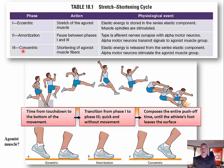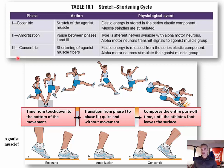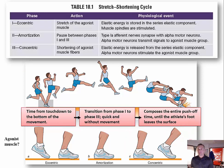The third and final phase of the stretch shortening cycle is the concentric phase — the body's response to the eccentric and amortization phases. In this phase, the energy stored in the series elastic components during the eccentric phase either is used to increase the force of the subsequent movement or is dissipated as heat, which would occur if the amortization phase is too long. In the long jump example, as soon as the movement begins in the upward direction — the push-off — the amortization phase has ended and the concentric phase has begun.